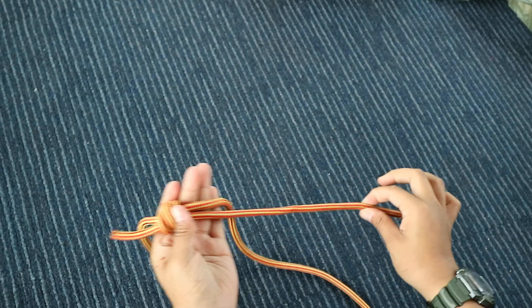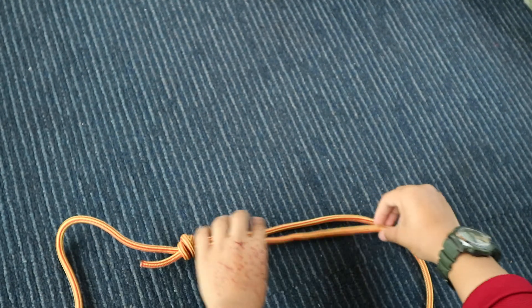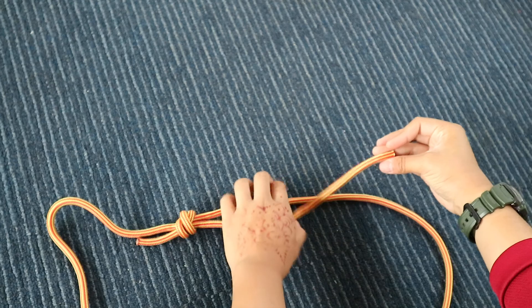Alright, so you're going to orientate the rope again this way with the end here, and make another of the same loop.